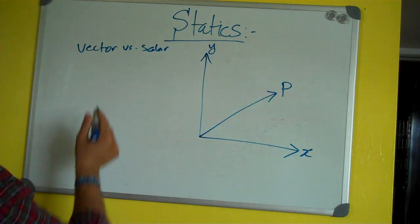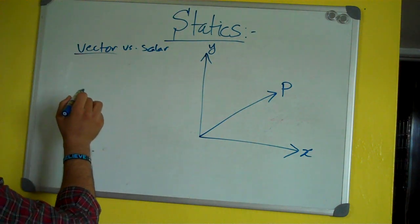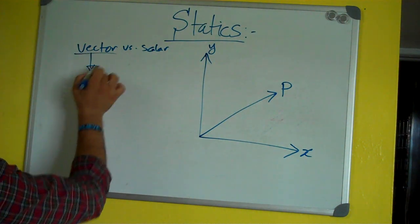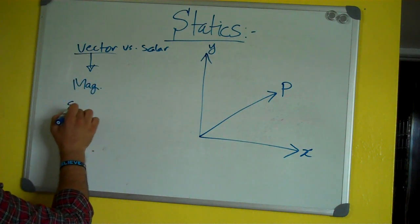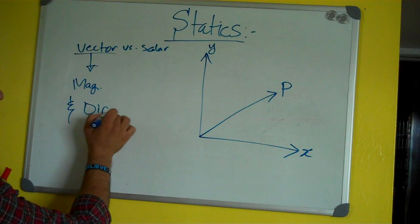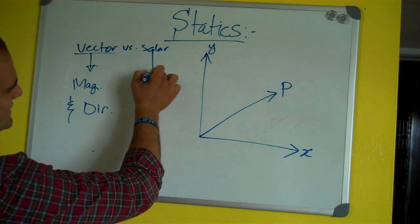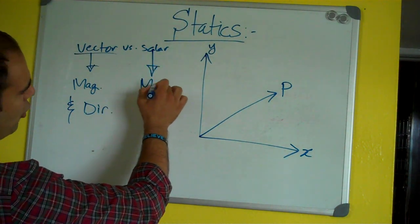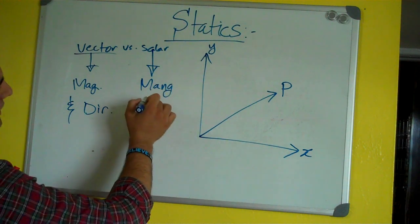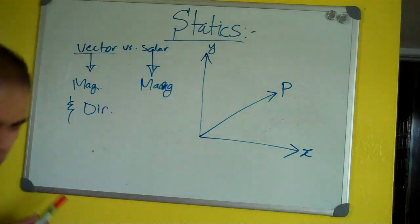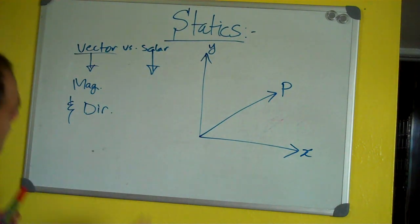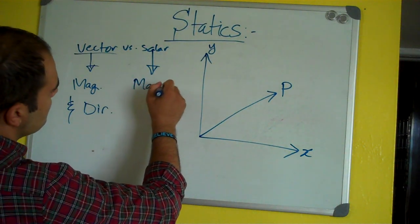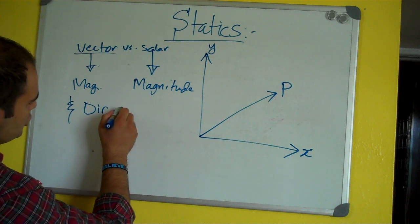Whoops. Vector. It's magnitude, or needs magnitude, and direction. Meanwhile, the scalar needs only magnitude. Oops. Let me write that down better. Magnitude and direction.